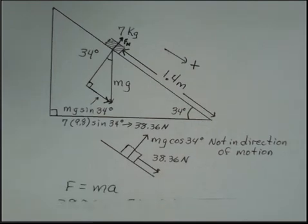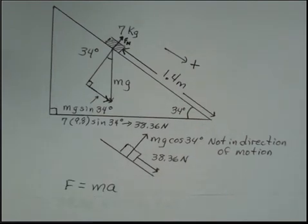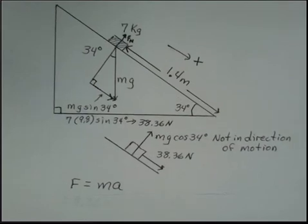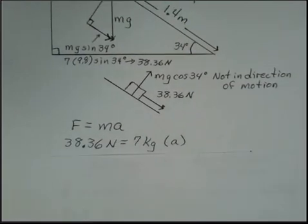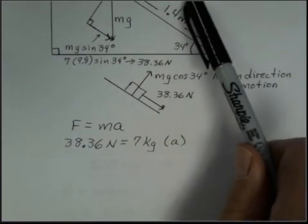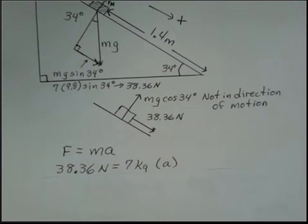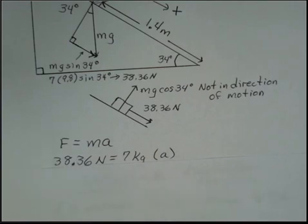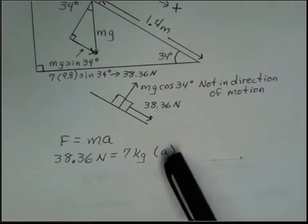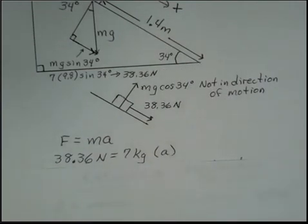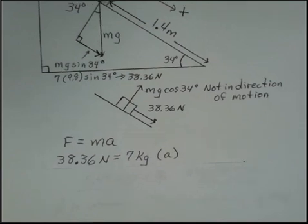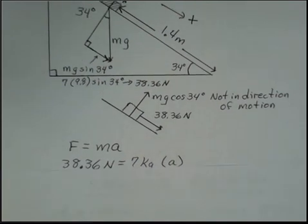So if we continue here, we're going to use F equals ma to come up with the acceleration. And our force, there's only one force. I'm going to use down the plane as the positive direction, so this force is a positive number and we'll get the acceleration as a positive number down the plane. It's always important in problems to know which direction you're calling positive and then be consistent as you work the problem.